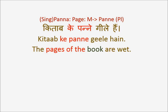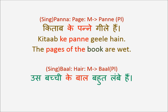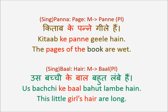Ka of masculine turns to Ke when it becomes plural. Similarly, Baal means hair. Even in English, you have either one hair strand or hair in plural. Us Bachchi Ke Baal — one hair strand would have been Ka Baal, but here we are talking about plural, so Ke Baal. The Ka turns to Ke in masculine when turning from singular to plural number. Kitab Ke Panne Gile Hai, Us Bachchi Ke Baal.